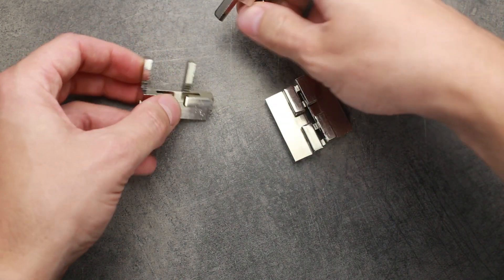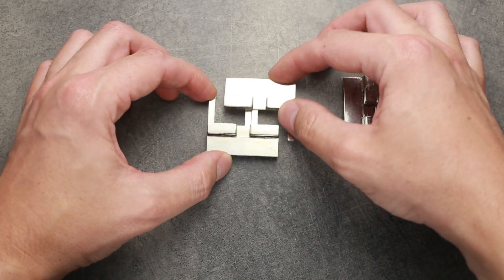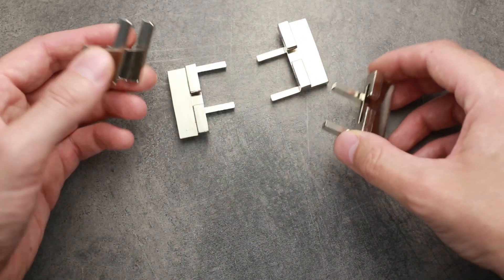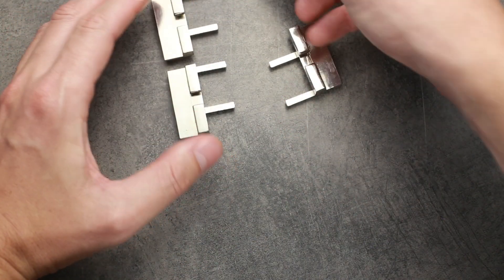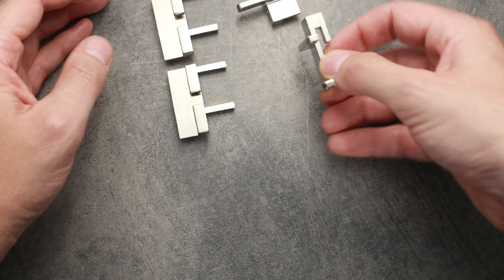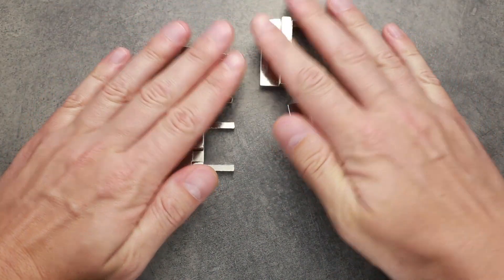So to put it back together, what you have to do is just put two parts like this. And by the way, all the parts are exactly the same. So if you put them all like this, you will see that all the parts are similar.